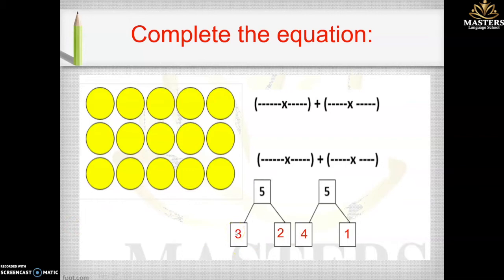Now I have three rows, so I'm going to write three times the first addend, which is three — so three times three — plus three again, which is the rows, times the second addend, which is two. So we get three times three plus three times two.